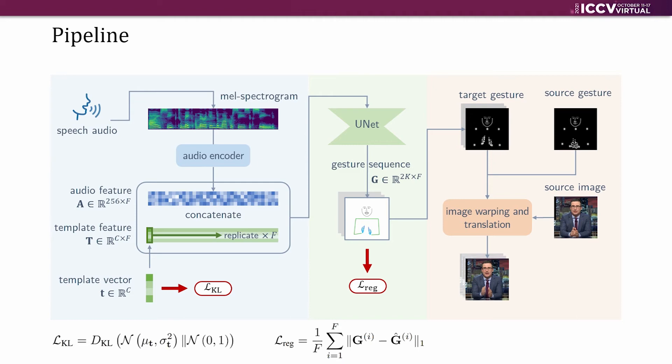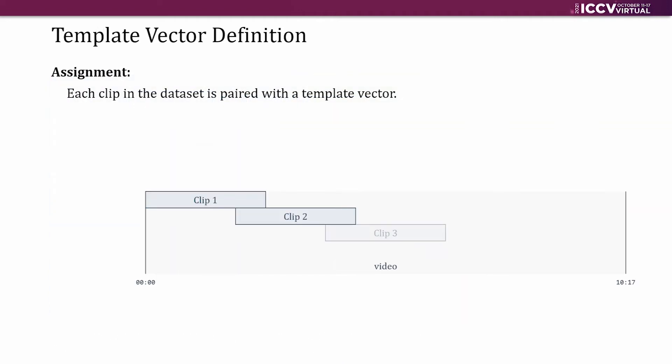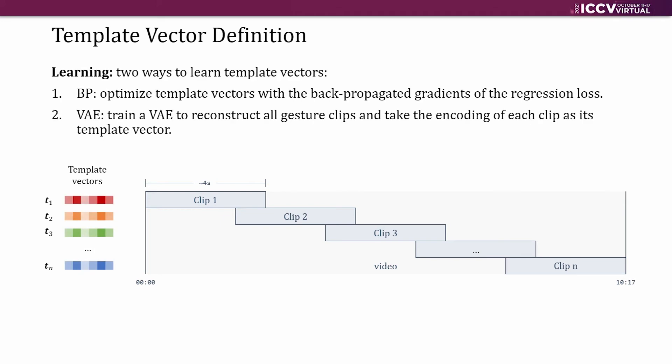Well, you must be wondering how we obtain the template vectors. Here is the answer. For an arbitrary video, we split it into short clips. Then, each clip is paired with a template vector. We provide two ways to learn the vectors. The first way is to optimize them with the back-propped gradient of the regression loss. The second way is to train a VAE of all gesture clips and take the encoding of each clip as its template vector.